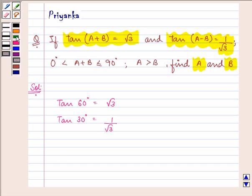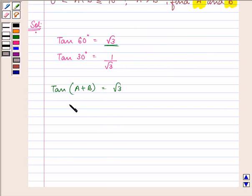Now, we are given that tan(A+B) = √3. But we have learned in our previous classes that the value of √3 is equivalent to tan 60°. So this implies we can write that tan(A+B) = tan 60°.